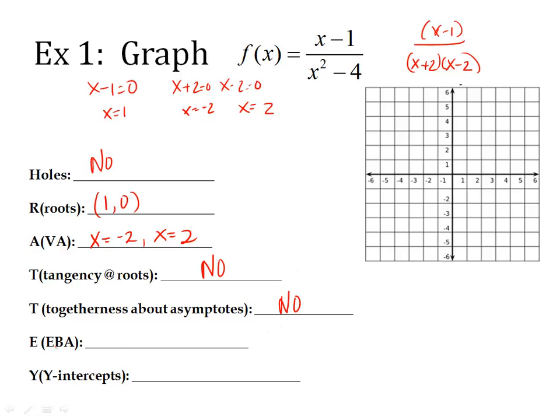EBA. End behavior. BOBBYO, BOTTNO, EATSDC. Look at your original equation. Where's the higher power? Bottom. This is a BOBBYO. Big on bottom, y equals 0. Okay. And then lastly, y-intercepts. You put in 0 everywhere there's an x and solve it. So I have 1. It's going to be positive 1/4. Remember, that's a y value.